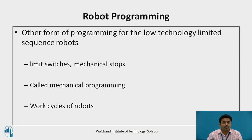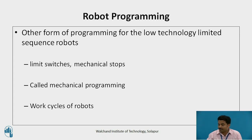In addition to lead-through and textual language programming, there is another form of programming for low-technology limited sequence robots. These robots are programmed by setting limit switches, mechanical stops, and other similar means to establish the end points of travel for each of the joints. This is sometimes called mechanical programming. The work cycles of these robots generally consist of a limited number of simple motions, for example pick-and-place applications, in which this manual programming is adequate.